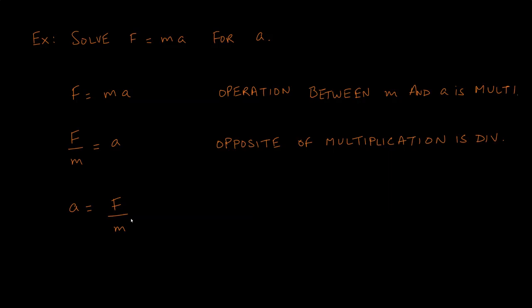We've solved for a — it is isolated by itself on one side. A common student mistake is thinking that having one 'a' by itself is enough, but you cannot have an 'a' on both sides. The variable must appear exactly once on one side — not 2a, not negative a, not 3a — just a, by itself.